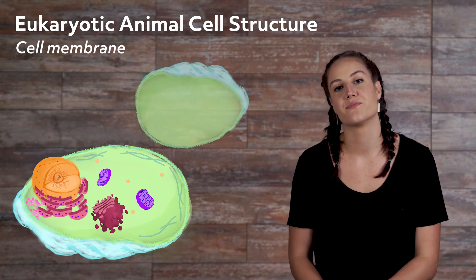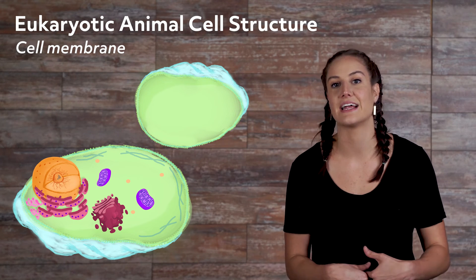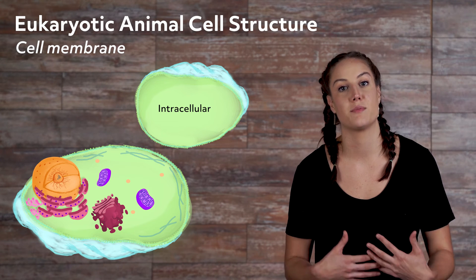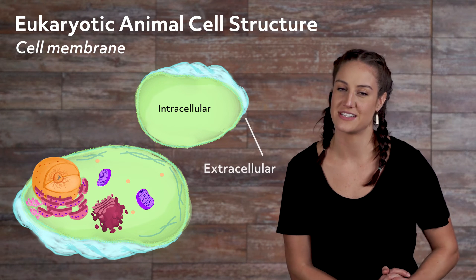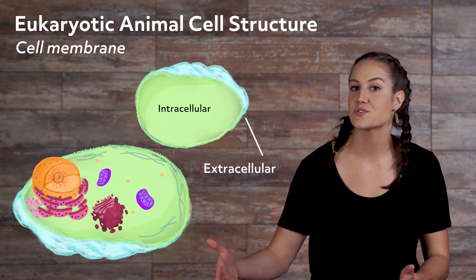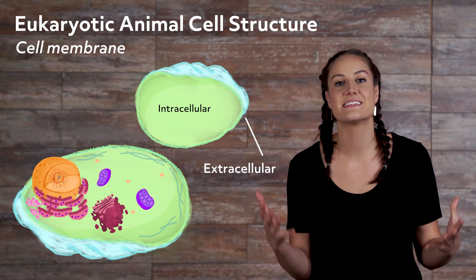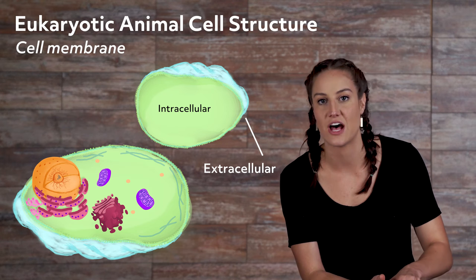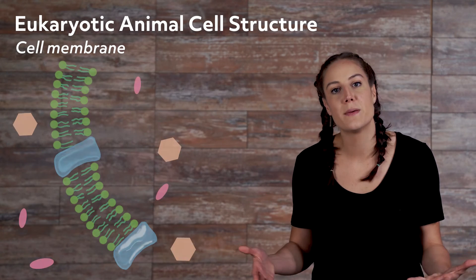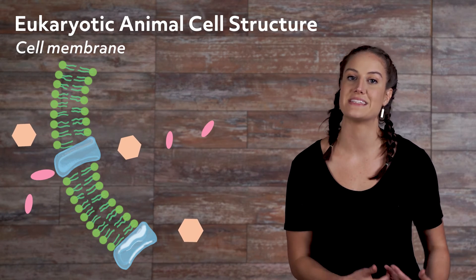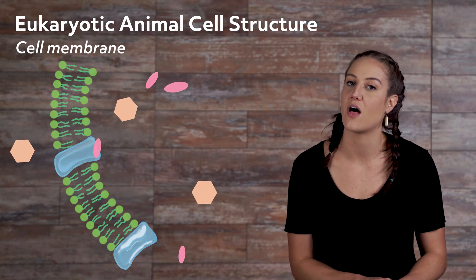Cell Membrane. You have a bunch of stuff inside of a cell — the material on the inside is referred to as intracellular — and a bunch of stuff outside of a cell, called extracellular. The cell membrane is what separates the extracellular material from all the intracellular material. It maintains the coherence of the cell and controls what passes in and out, and is made up of a double layer of phospholipids and proteins.